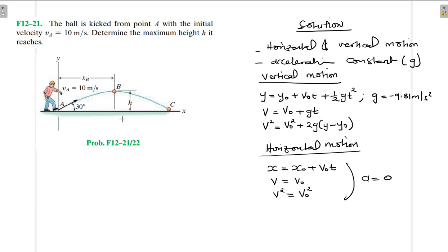They are asking us to find the maximum height h. Before we do that, let's get the different components of this velocity. We are going to have v_Ax, which is equal to 10·cos30°, and v_Ay, which is equal to 10·sin30°.